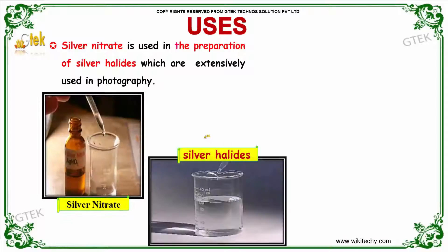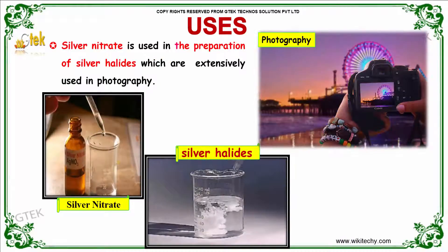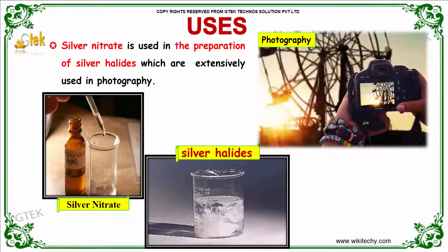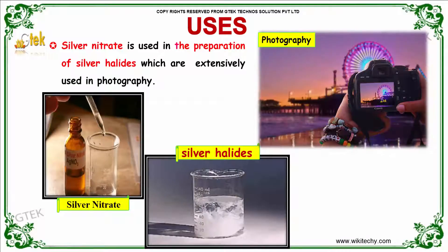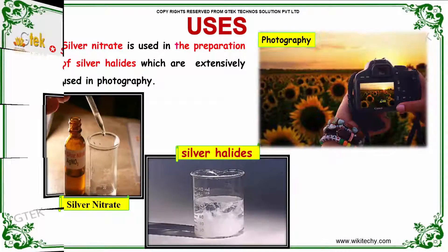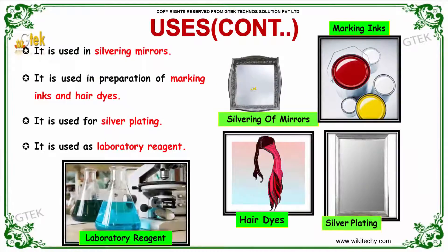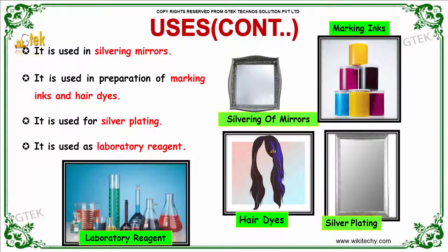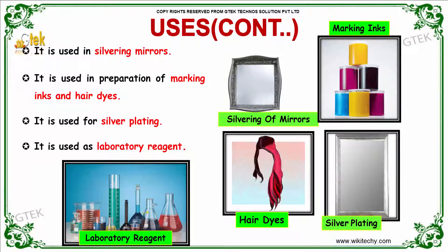If we talk about the uses, silver nitrate is used in the preparation of silver halides, which are extensively used in photography. It is used in silvering mirrors and in the preparation of marking inks and hair dyes. It is also used for silver plating and as a laboratory reagent.